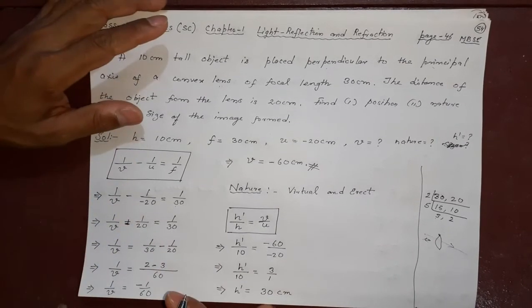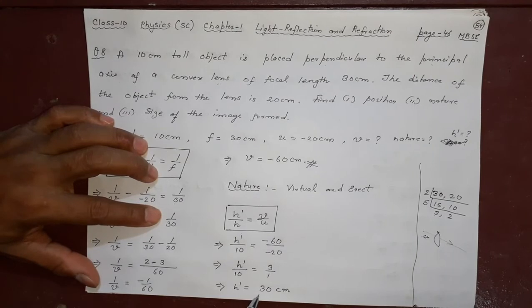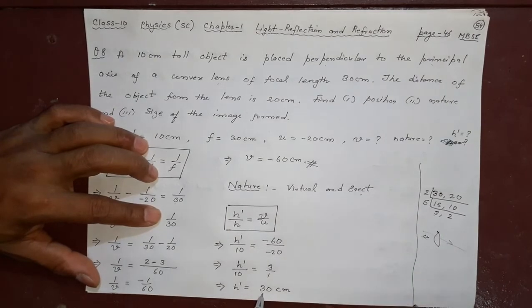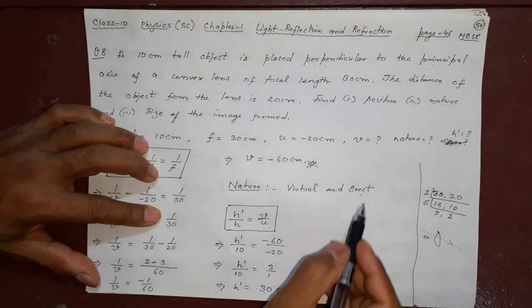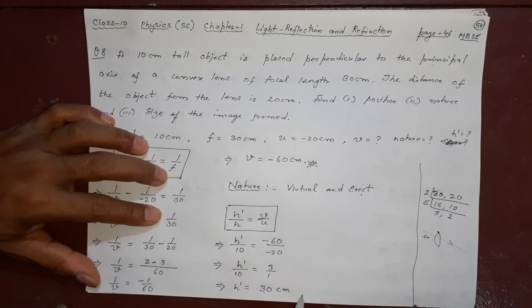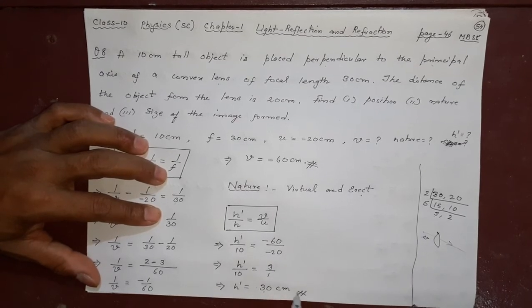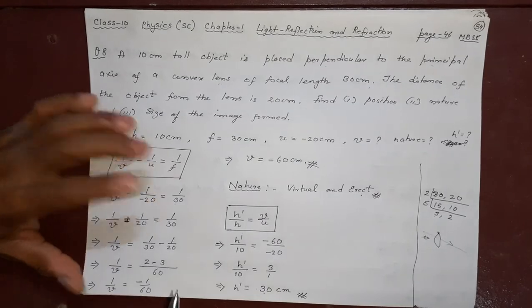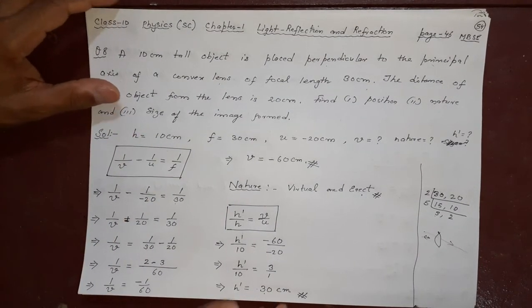So you can see the virtual and erect is justified from here also. If the image height is positive, that means it is erect. This plus sign means it is erect. So this way you can understand the three things: one marks, one marks, one marks and one marks. Three things are answered. Thank you.